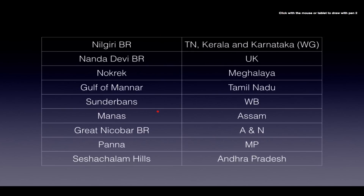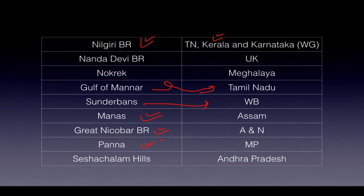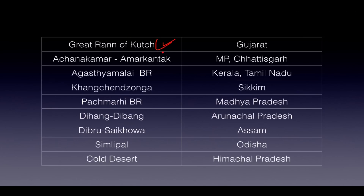The 18 biosphere reserves are: Nilgiri (Tamil Nadu, Kerala, Karnataka — Western Ghats), Nanda Devi (Uttarakhand), Nokrek (Meghalaya), Gulf of Mannar (Tamil Nadu, between India and Sri Lanka), Sundarbans (West Bengal), Manas (Assam), Great Nicobar (Andaman and Nicobar), Panna (Madhya Pradesh), Seshachalam Hills (Andhra Pradesh), Rann of Kutch (Gujarat), Achanakmaar-Amarkantak (MP/Chhattisgarh border), Agasthyamalai (Kerala and Tamil Nadu), Khangchendzonga (Sikkim), Pachmarhi (Madhya Pradesh), Dehang-Dibang (Arunachal Pradesh), Dibru-Saikhowa (Assam), Simlipal (Odisha), and Cold Desert (Himachal Pradesh).